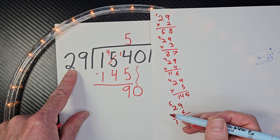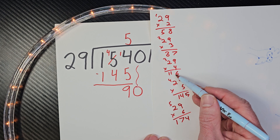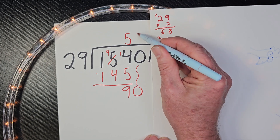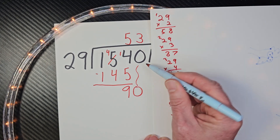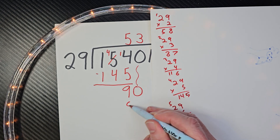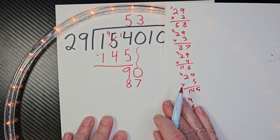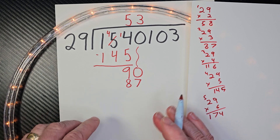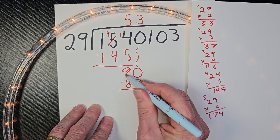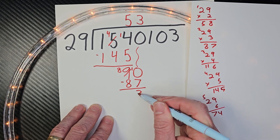How many times can I take 29 into 90? Do you see anything in here? I have 87 and then 116 — that is too high, so we're going to stay with 3. So I'm going to put a 3 right here. And then 3 times 29 equals 87. I'm going to start writing a little smaller because I think this problem is going to be quite big by the time I finish. So I subtract — I need to borrow. This will be an 8, this is a 10, so 10 minus 7 is 3.